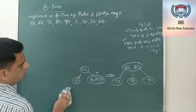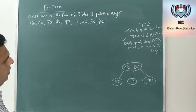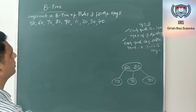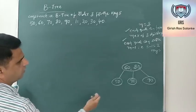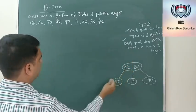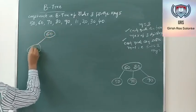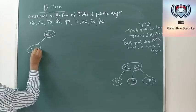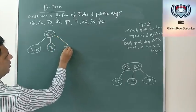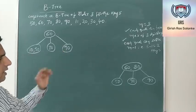Next insert 10. Compare 10 with the root: 10 is less than 60, so it goes to the left side. Inserting 10 gives [10, 50] at the left child. The tree now has root [60, 80], with left child [10, 50], middle child [70], and right child [90]. All leaf nodes are at the same level.